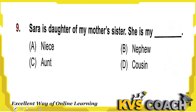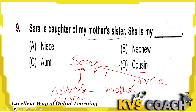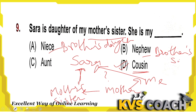Next: Sarah is the daughter of my mother's sister. My mother's sister is my aunt, and my aunt's daughter is my cousin. Niece is my brother's daughter, nephew is my brother's or sister's son, and aunt is my mother's or father's sister. The children of my uncle or aunt are my cousins. So Sarah is my cousin. Option D is the right answer.